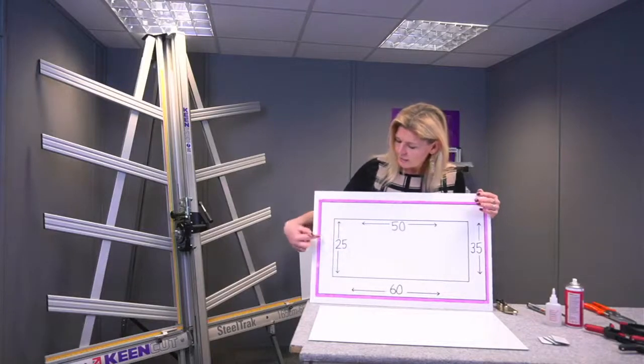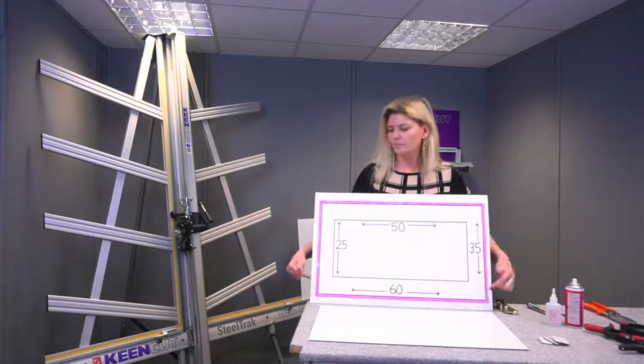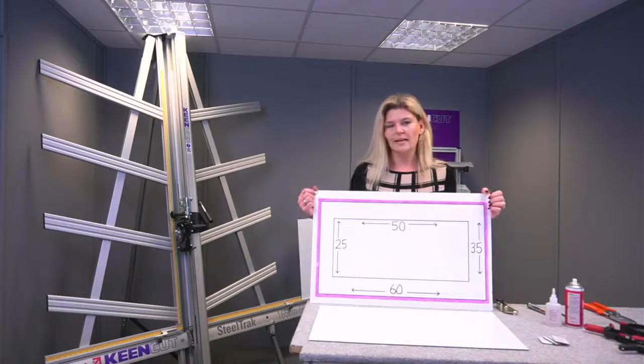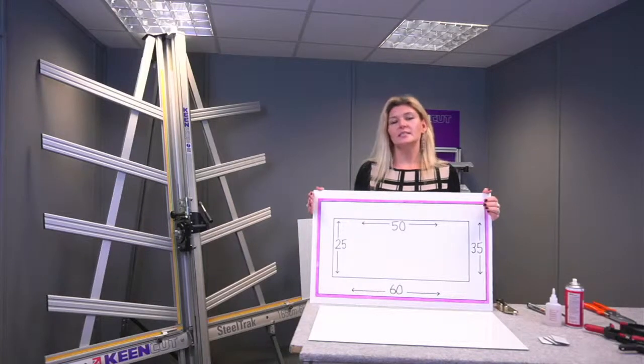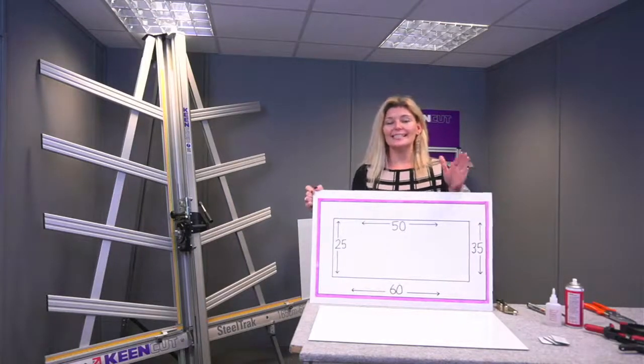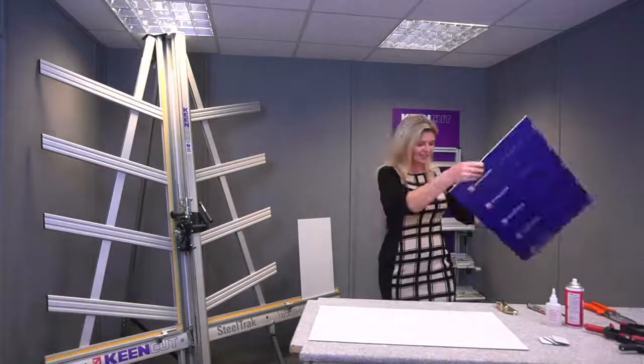So I need a piece of ACP that's actually 60 by 35. The purple border around the board is actually a one centimetre border and this is to take into consideration the one centimetre offset of the V-grooving tool to the line of cut on the KeenCut steel track.